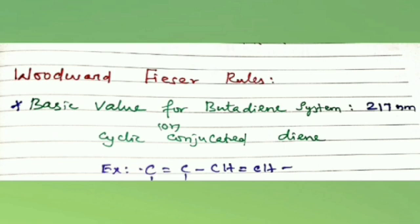The longer the conjugated system, the greater is the wavelength of the absorption maximum. The intensity of absorption also increases with increase in the length of the chromophore. The presence of alkyl groups on the double bond also causes a bathochromic shift.